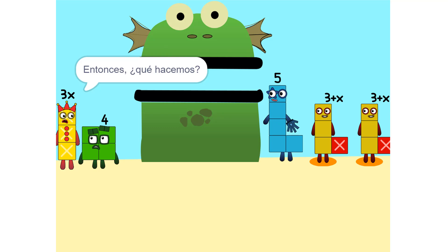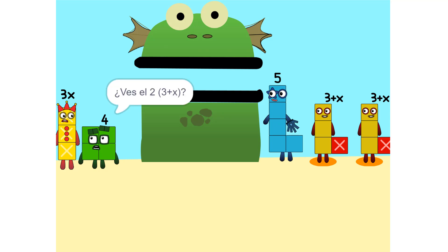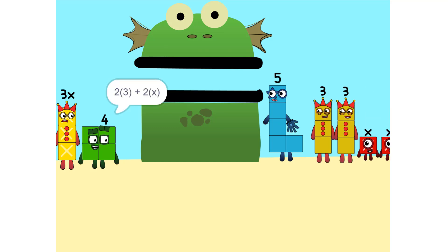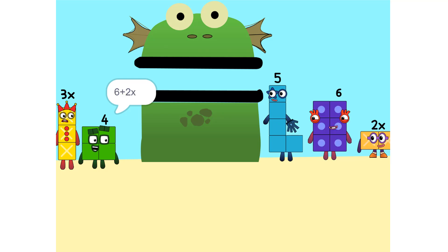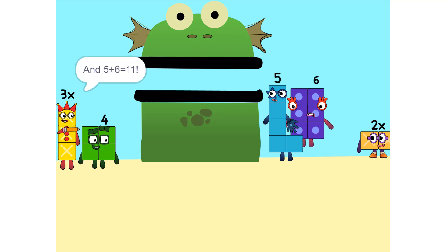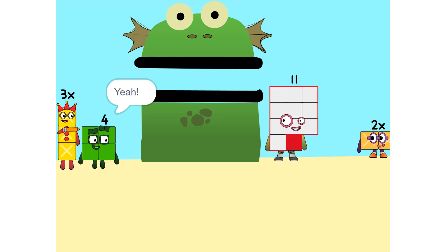Entonces, ¿qué hacemos? ¿Ves el 2 veces 3 más X? Es lo mismo que 2 veces 3 más 2 veces X. ¿Qué es? 6 más 2X. And 5 plus 6 is 11.